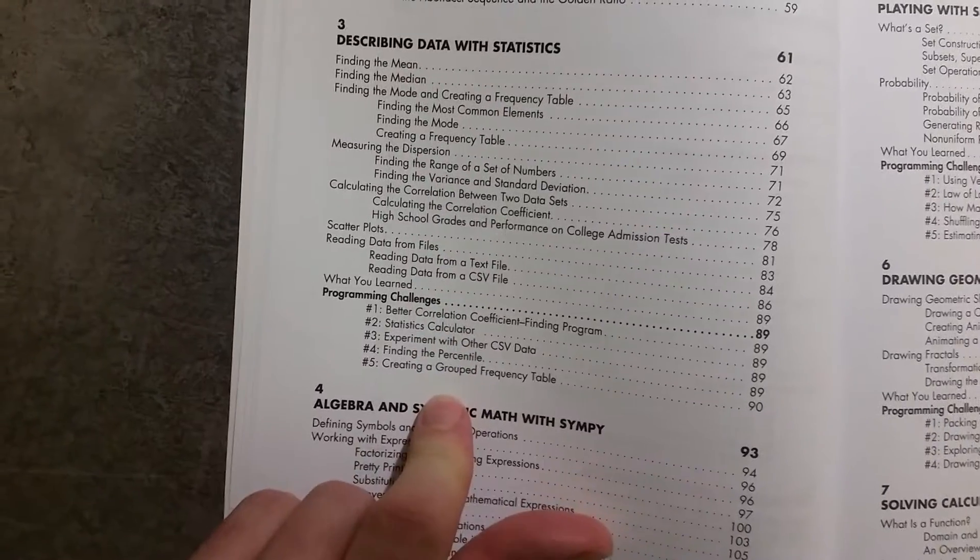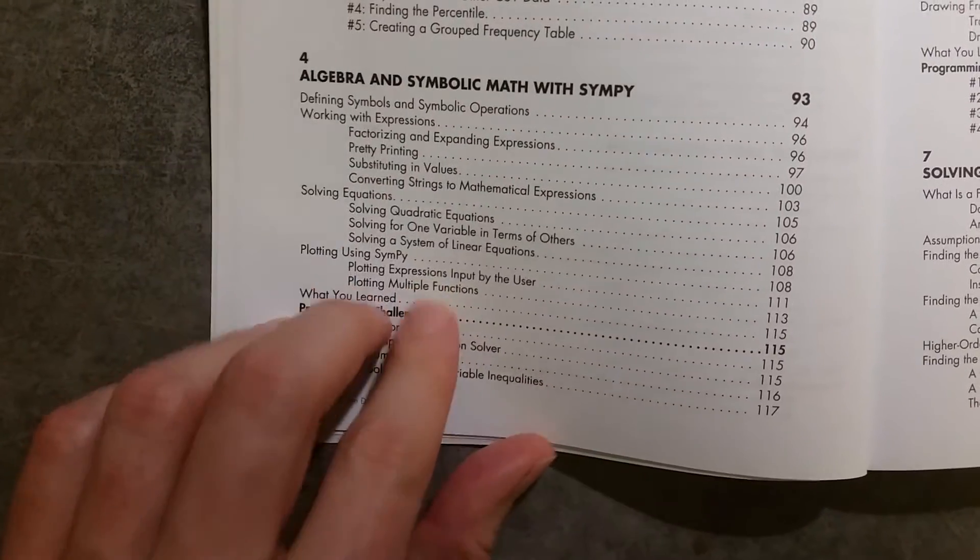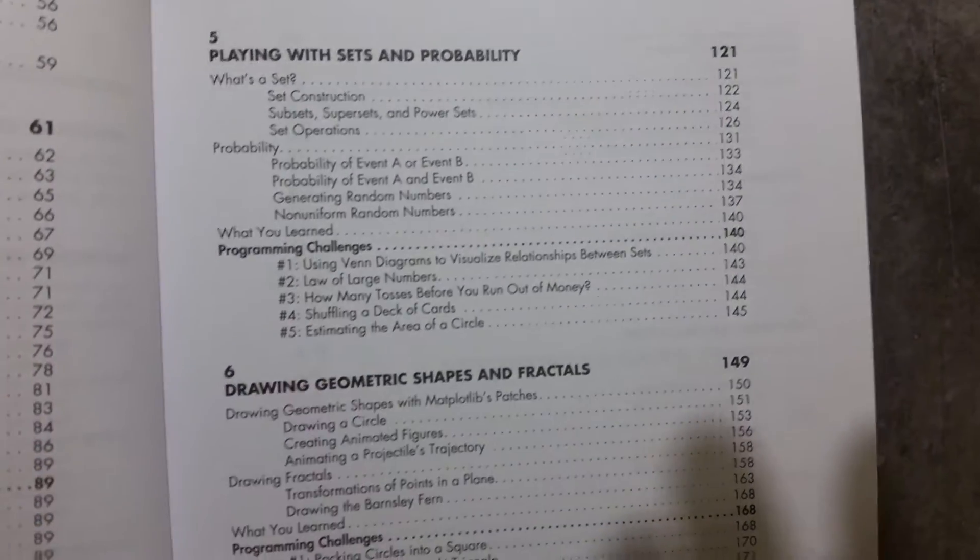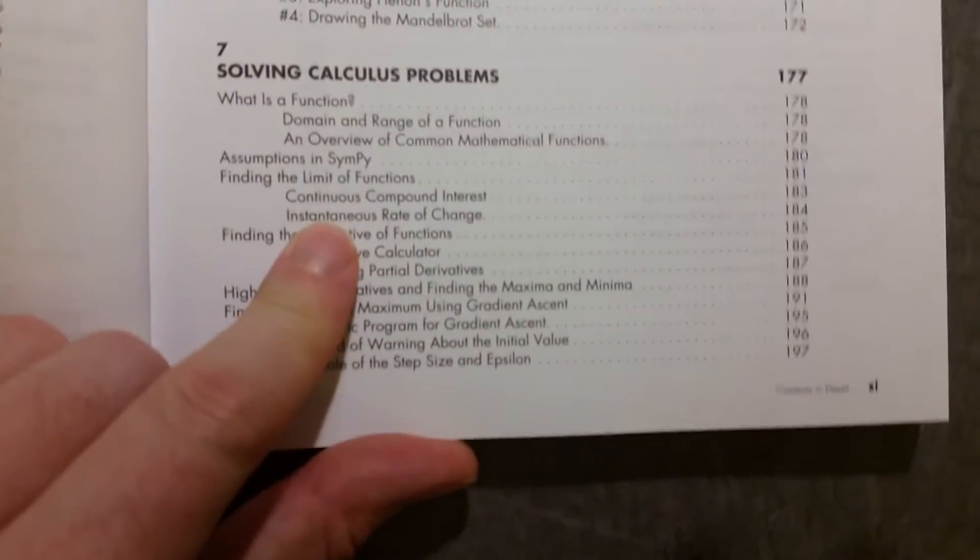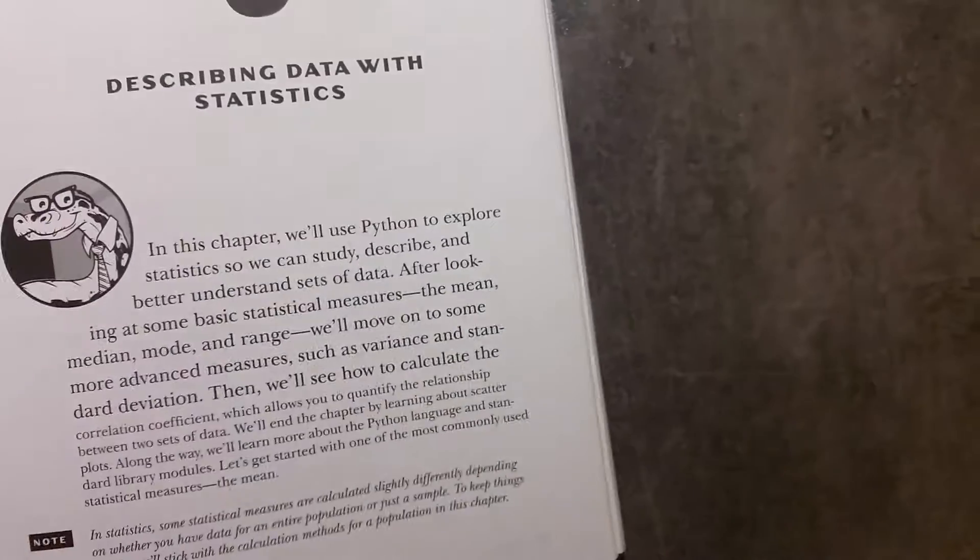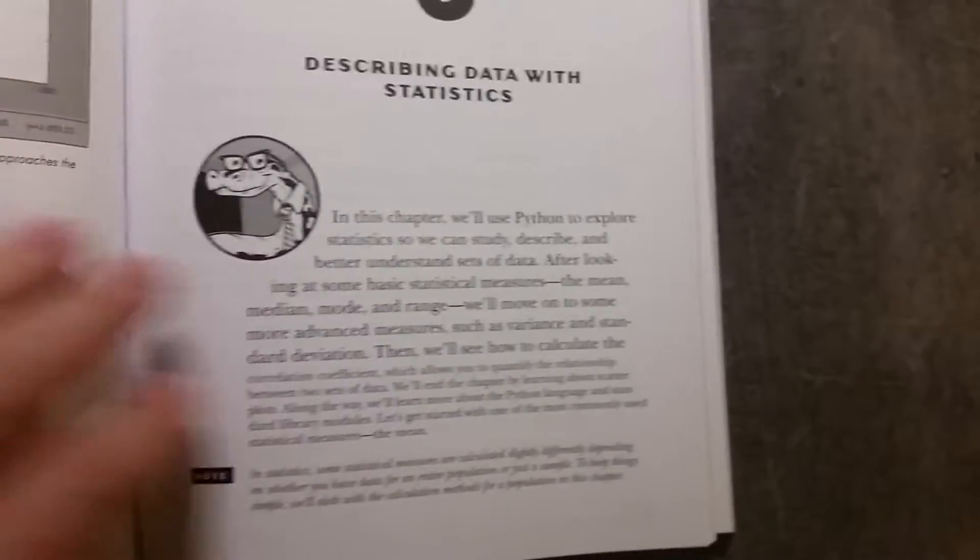And then describing data with statistics, and then algebra and symbolic maths there, playing with sets and probability, and solving calculus problems. So let's have a quick look at, where shall we go, let's go to chapter three, describing data with statistics. So what does it look at?